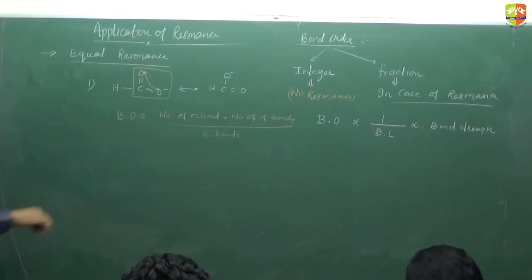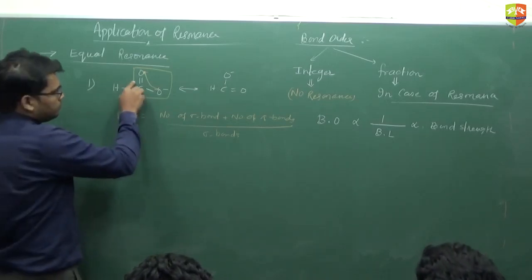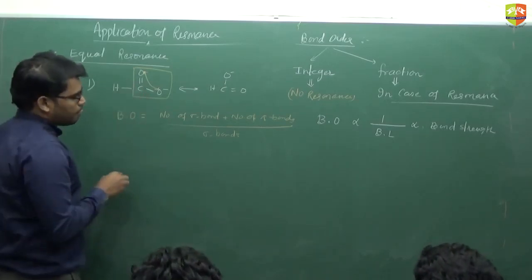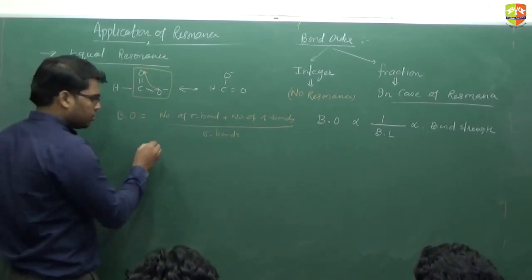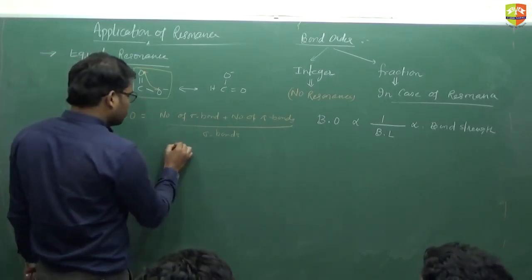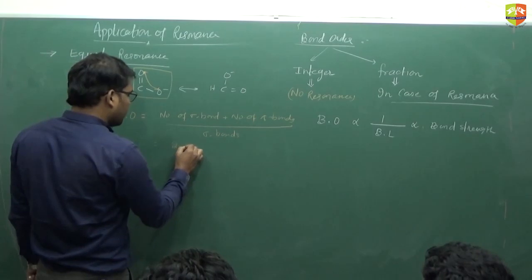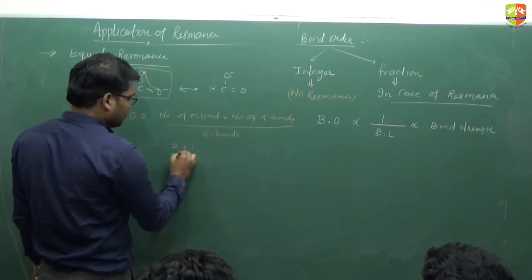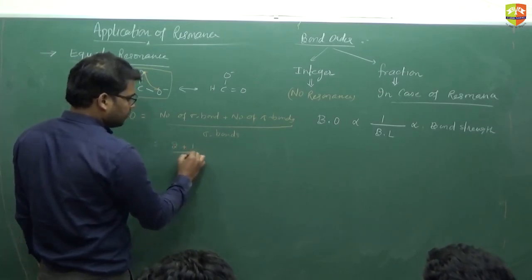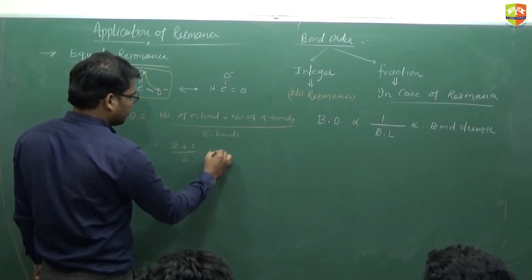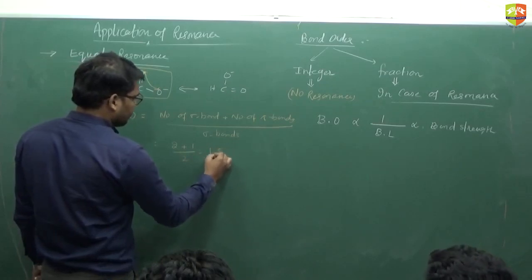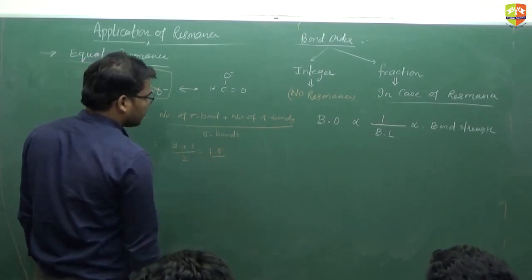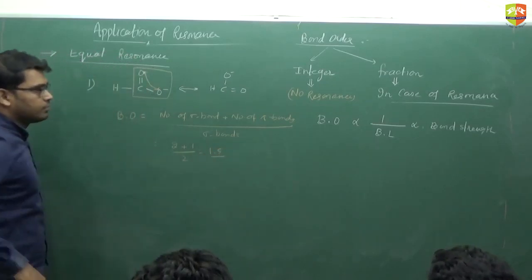How many sigma bonds do we have here? Two sigma bonds. How many pi bonds? One. So the bond order is 2 plus 1 divided by 2, which gives 1.5.